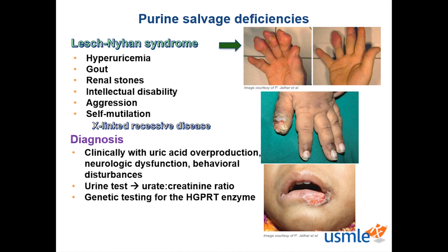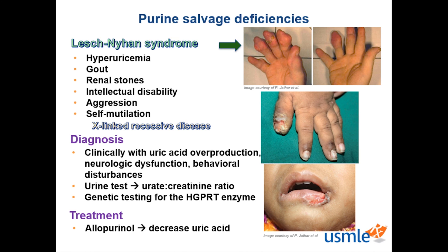How do we treat Lesch-Nyhan syndrome? One commonly used drug is allopurinol, which inhibits xanthine oxidase. This will decrease the level of uric acid in the blood. Here's an interesting pearl: xanthine oxidase metabolizes normal purines but can also metabolize drugs that mimic purines, such as 6-mercaptopurine, an antineoplastic modified purine that inhibits purine synthesis. It's used to treat leukemias and inflammatory diseases like rheumatoid arthritis and inflammatory bowel disease. If a patient on allopurinol also needs 6-mercaptopurine, the allopurinol will inhibit xanthine oxidase, reducing metabolism of 6-mercaptopurine, so a lower dose is needed.